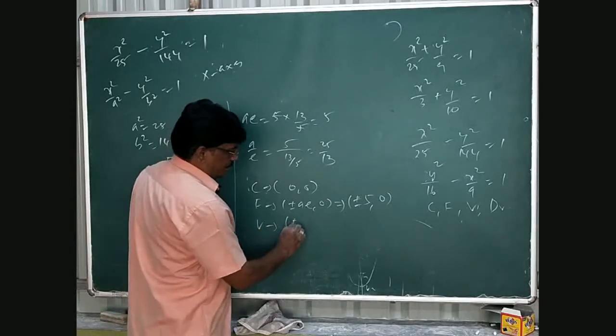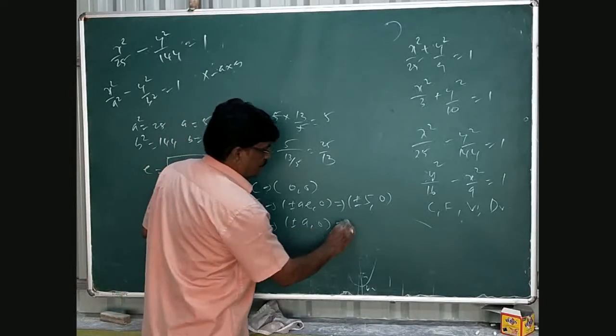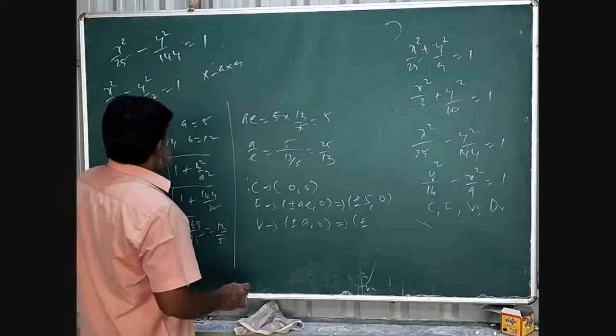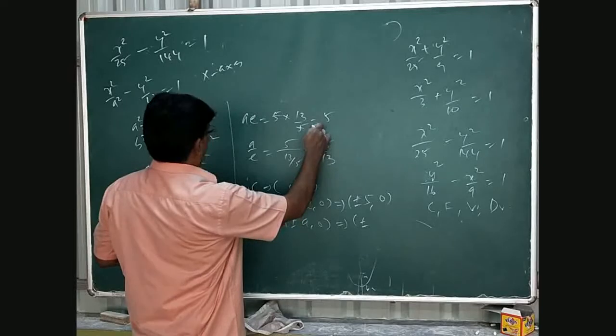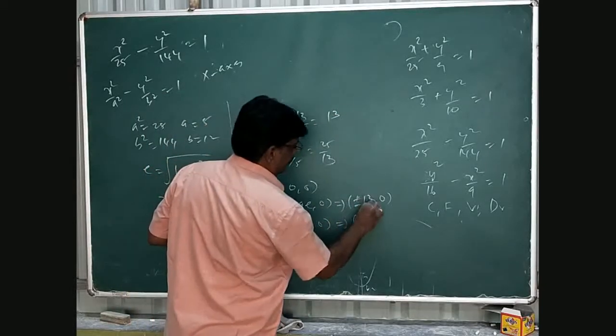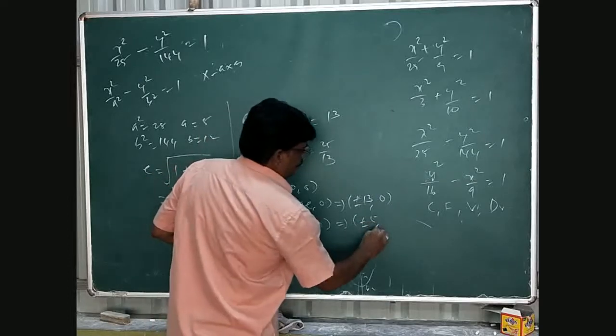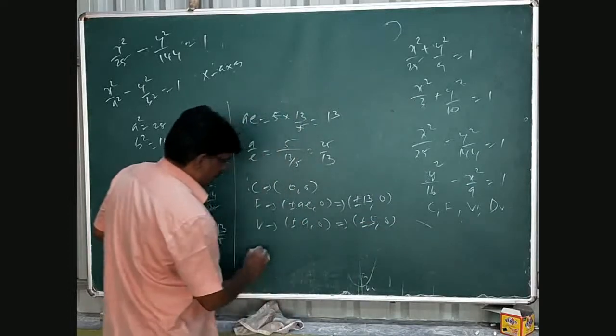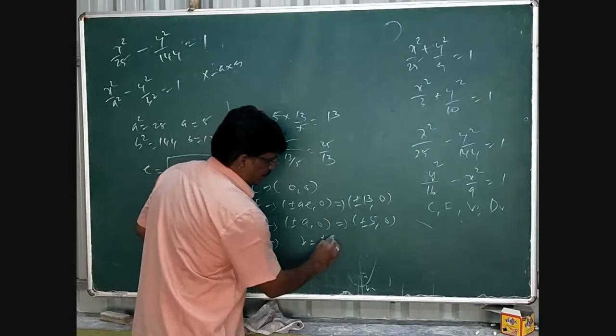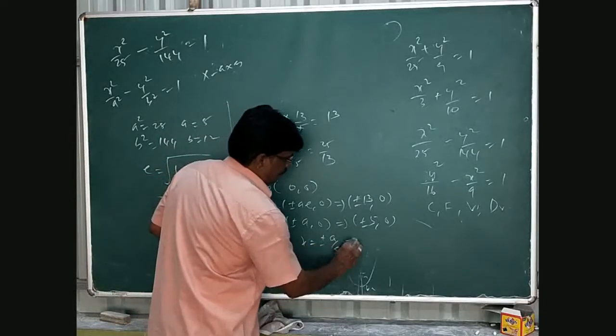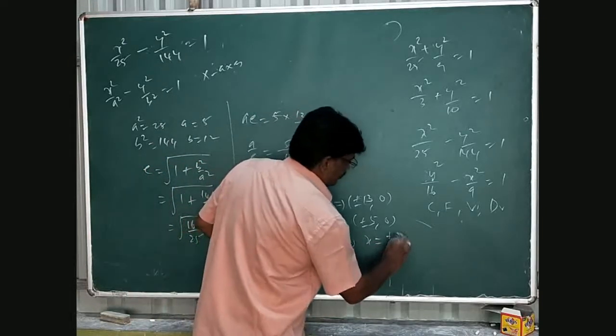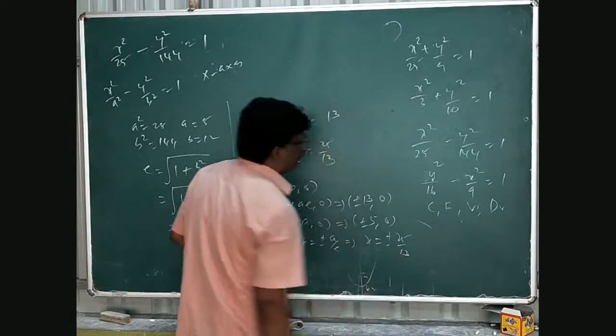Then vertex, plus or minus a comma 0. Sorry, ae is 13. This is plus or minus 13 comma 0. And directrix, x equals plus or minus a by e, implies x equals plus or minus 25 by 13.